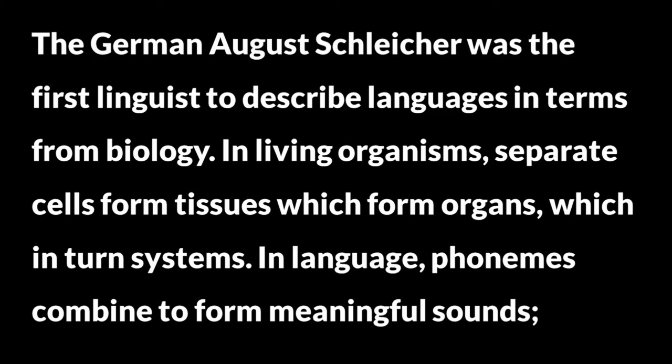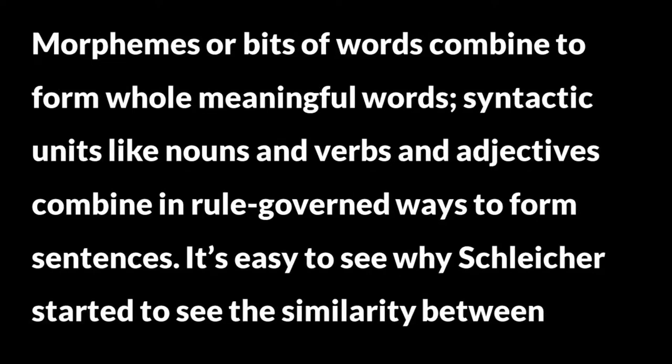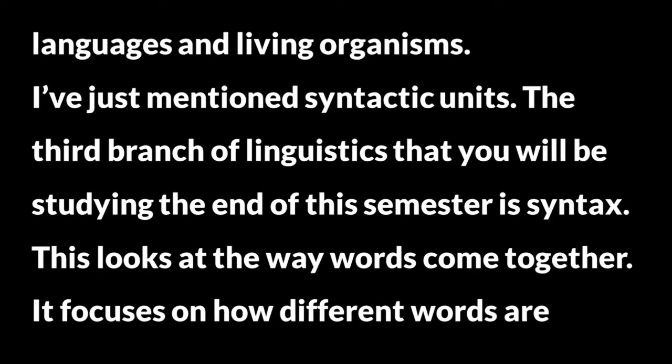The German August Schleicher was the first linguist to describe languages in terms from biology. In living organisms, separate cells form tissues which form organs, which in turn form systems. In language, phonemes combine to form meaningful sounds. Morphemes, or bits of words, combine to form whole meaningful words. Syntactic units like nouns and verbs and adjectives combine in rule-governed ways to form sentences. It's easy to see why Schleicher started to see the similarity between languages and living organisms.